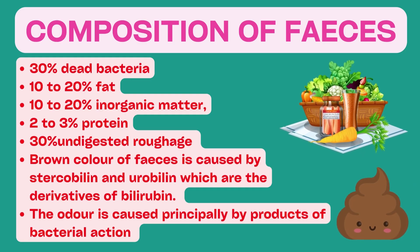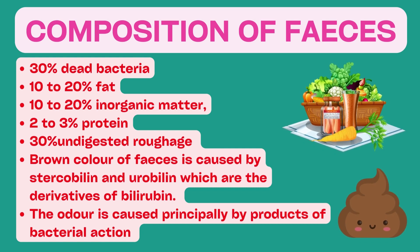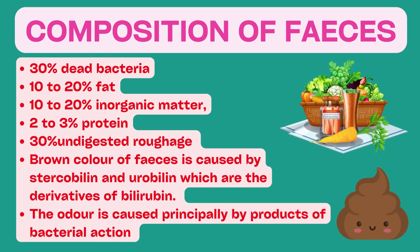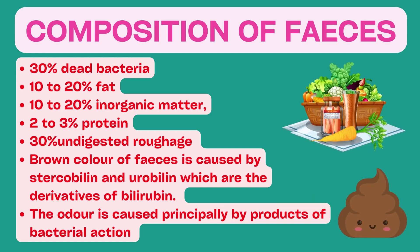Now let us briefly understand the composition of feces. Feces normally consist of about 30% dead bacteria, 10-20% fat, 10-20% inorganic matter, 2-3% protein, and 30% undigested roughage from food and dried constituents of digestive juices such as bile pigment and sloughed epithelial cells. The brown color of feces is caused by stercobilin and urobilin, which are derivatives of bilirubin. The odor is caused principally by products of bacterial action, varying between individuals depending on colonic bacterial flora and food eaten. The odoriferous products include indole, skatole, mercaptans, and hydrogen sulfide.